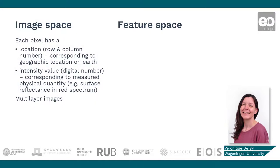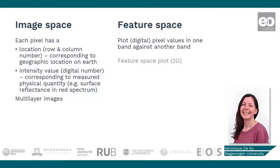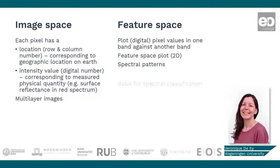Another space can be defined by plotting the digital numbers of one band against those in another band over the entire image, regardless of pixel location. This is called the feature space. The feature space can be visualized with a two-dimensional feature space plot, and it gives us the spectral patterns present in an image. These spectral patterns form the basis for spectral classification.